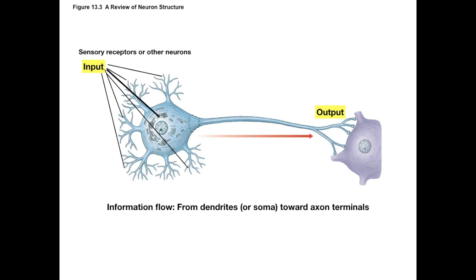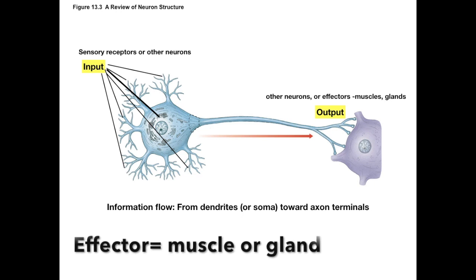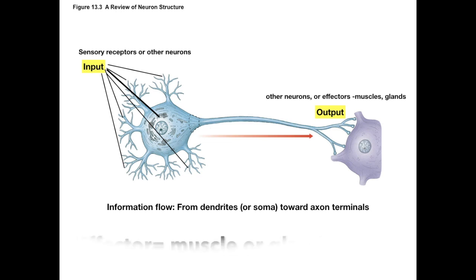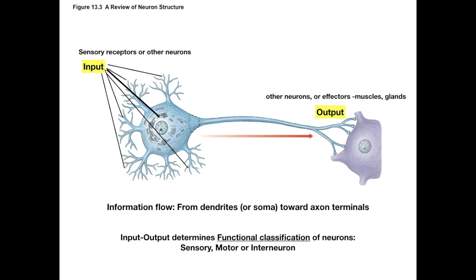Those signals will flow toward the cell body from the dendrites and toward the axon hillock, and if the decision is made to fire, will travel down the axon towards the target cell. At the axon terminal, that signal is passed on through a chemical signal onto another neuron, or out to the periphery to what is called an effector cell. These are also referred to as neuroeffectors or just effectors, and are some kind of muscle cell or gland that will respond to that stimulation. This flow of information from input through the dendrites and cell body out through the axon to the target cell flows only in this direction, never in the opposite way.